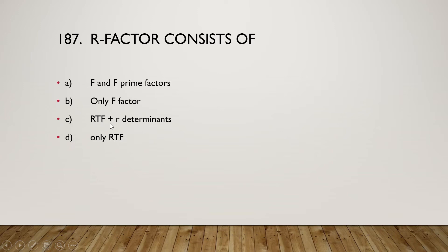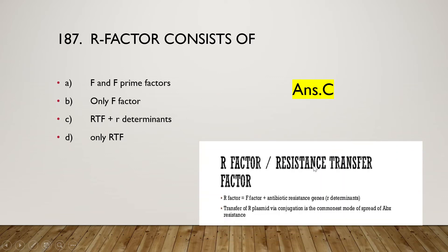The next question: R factor consists of F and F prime factors only, F factors, RTF plus R determinants, or only RTF? Here F means fertility, R means resistance, and RTF means resistance transfer factor. The right answer is option C, RTF plus R determinants. The R factor equals the F factor plus antibiotic resistance genes — that is, the plasmid which contains antibiotic resistance genes.